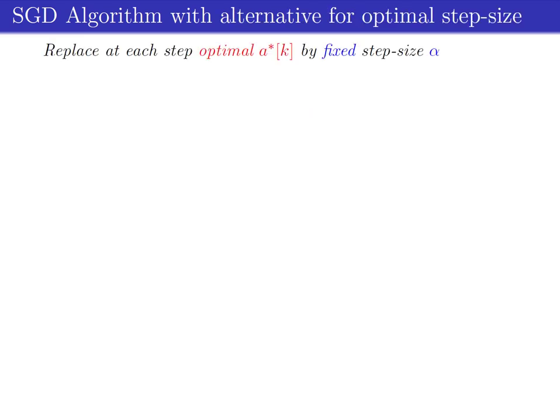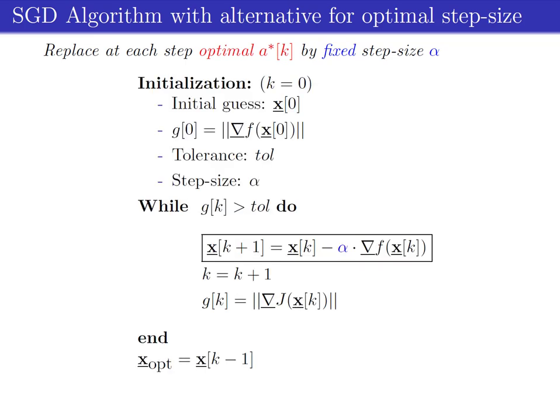Depending on the shape of the multivariable function f(x), the optimal step size a-star must be recalculated every new iteration. A practical alternative is to replace this optimal step size by a fixed step size, denoted by alpha, allowing the calculation of a-star to be skipped in the update loop of the SGD algorithm.